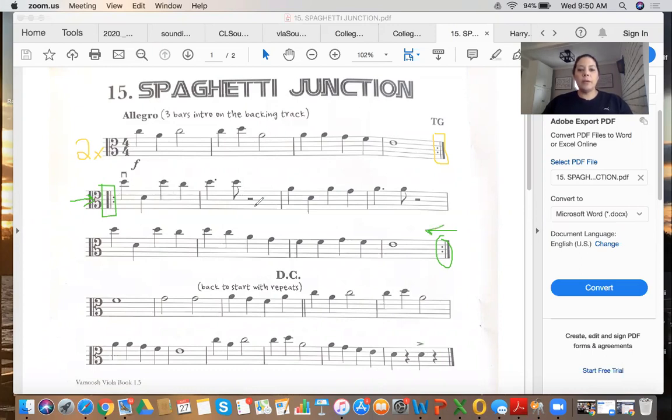Once you've done line two and three twice, you continue to this bar here. And let's make that yellow and I'll show you why in a minute. When you get to the DC, DC means go back to the beginning. So right here you'll go back to the start.